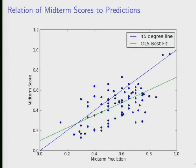Here are the raw midterm scores versus the predictions you made. Each of you turned in a prediction of your midterm score between zero and one. Not all of you made a prediction. You can see there's a pretty decent positive relationship. The blue line is a 45-degree line — if all of you had exactly predicted your performance, all points would line up on that line. The green line is an ordinary least squares fit to the data.